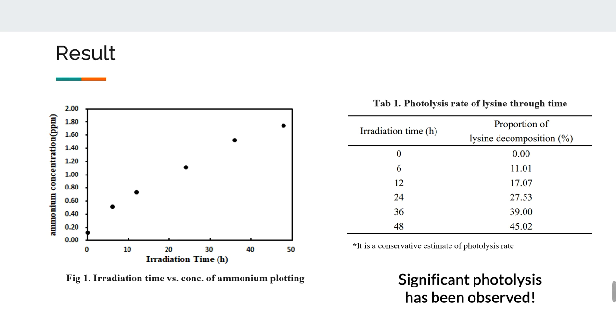Here show our results. By plotting irradiation time versus concentration of ammonium, we get figure 1. As you can see, we have observed a considerable increase in ammonium concentration, indicating that there has been significant photolysis of lysine. By some simple calculation, we suggest that at least 45% of lysine has decomposed after 48 hours of irradiation.